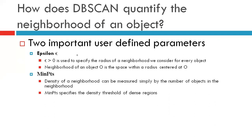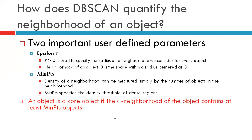Any object will be classified as a core object if it has got at least min points number of objects within the radius of epsilon. That is the definition of a core object.